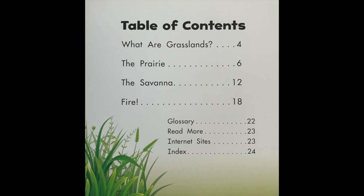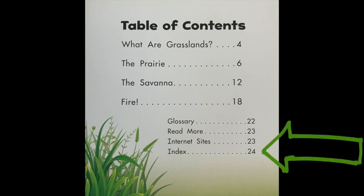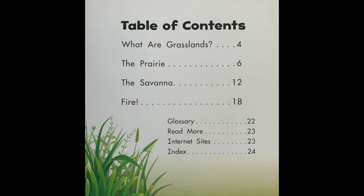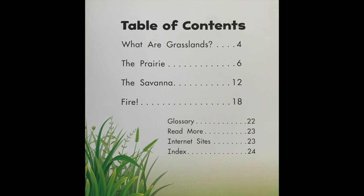The Table of Contents lists the parts of the book in order of the pages that they appear. If you look on the right-hand side, the numbers go from the smallest number to the biggest number, because as you turn the pages, the numbers get bigger and bigger. So the first part we would read about is called What Are Grasslands, and you can find that on page four.